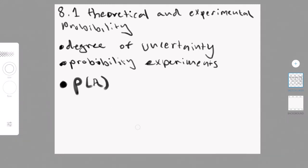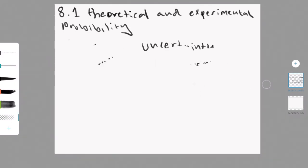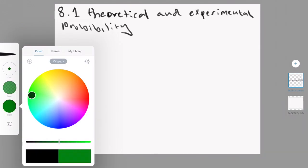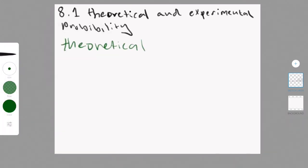Which then implies that P of A can be between 0 and 1. So the probability of an event cannot be greater than 1.